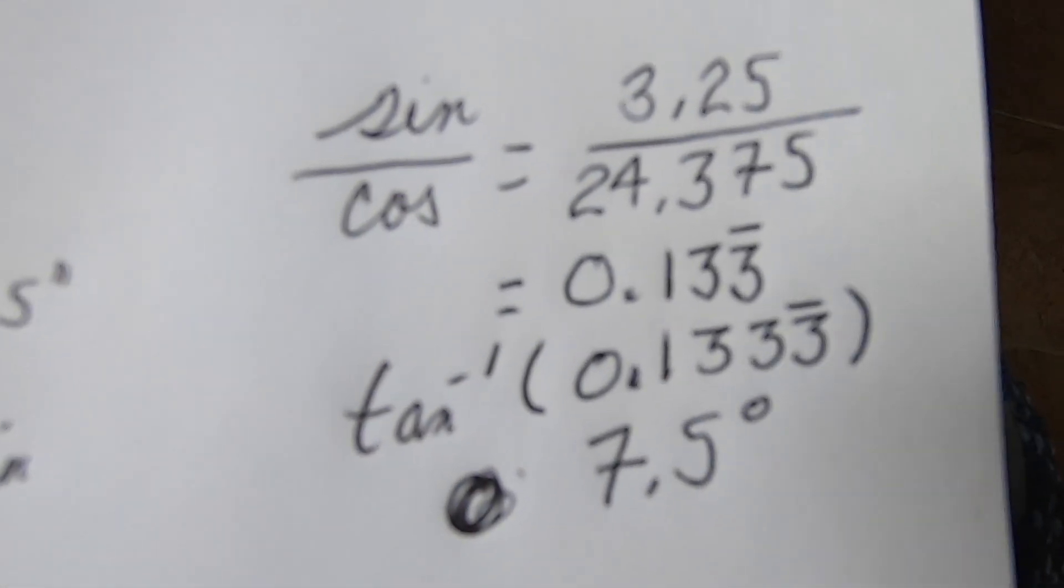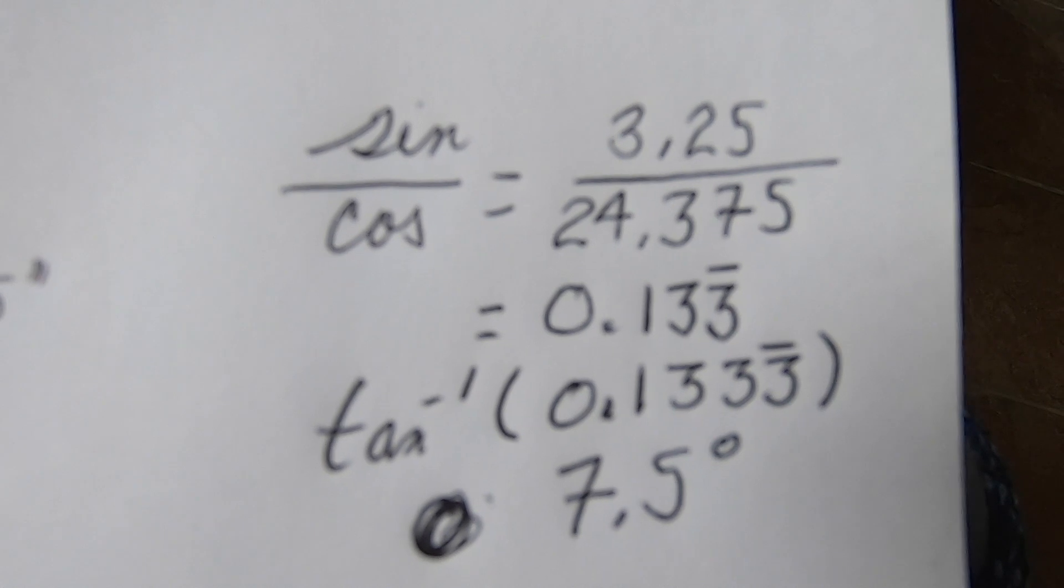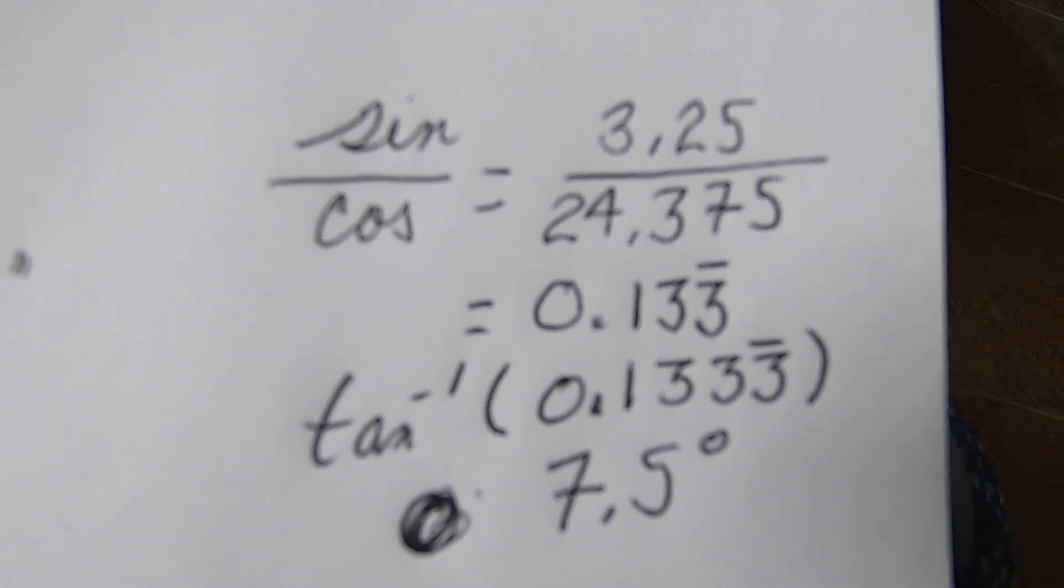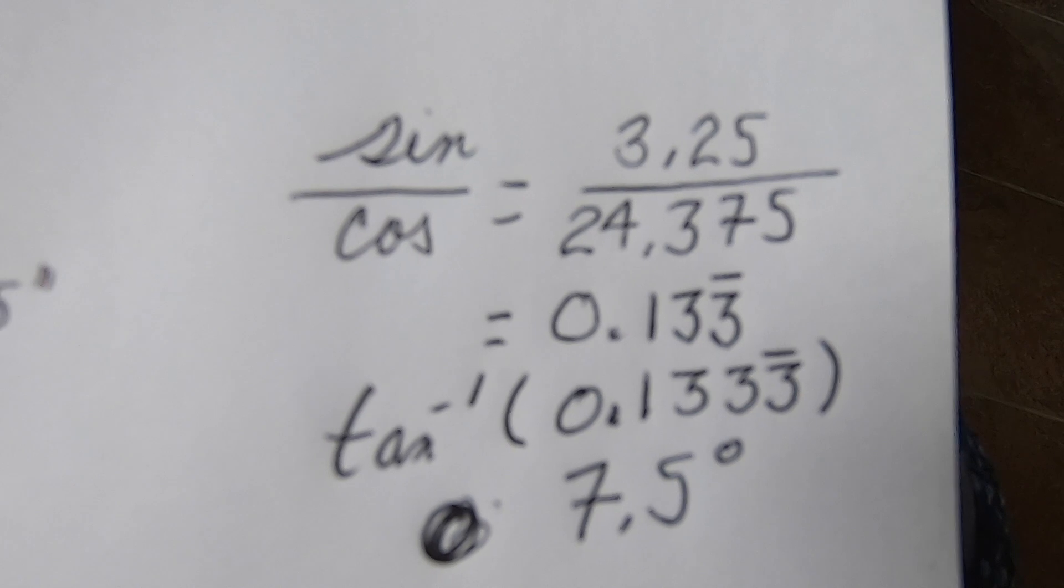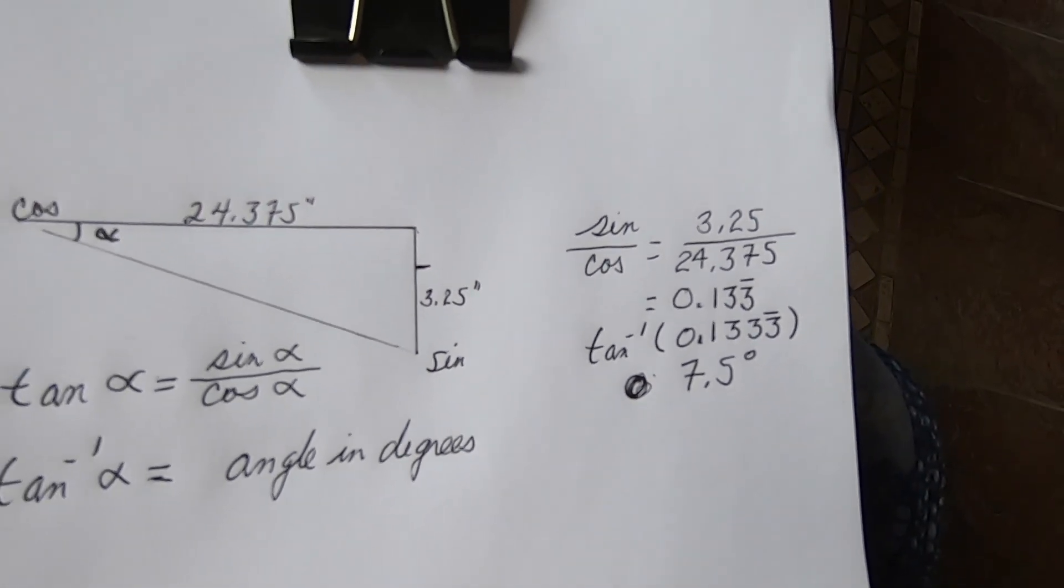We have 3.25 divided by 24.375, that gives us 0.1333 repeating. It's actually very close to that. The tangent of that is 7.5 degrees.